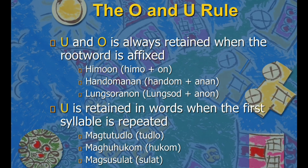Another rule: O and U are always retained when the root word meaning is affected by a suffix or affix. Like himo — when you add the suffix -on, it becomes himo-on, and the O in himo is retained. Hando becomes handuman. Next, U is retained in words when the first syllable is repeated — like tudlo: when it becomes mag-tudlo, the TU of tudlo is retained. Mag-tudlo, mag-hukum, mag-susulat.